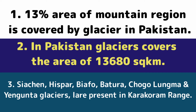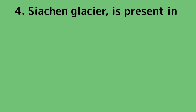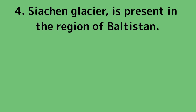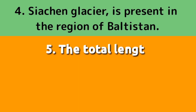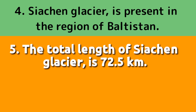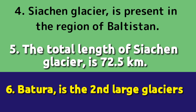Number 3: Siachen, Hispar, Biafo, Batura, Chogolungma, and Yenguta glaciers are present in the Karakoram Range. Number 4: Siachen Glacier is present in the region of Baltistan. Number 5: The total length of Siachen Glacier is 72.5 kilometers. Number 6: Batura is the second largest glacier.